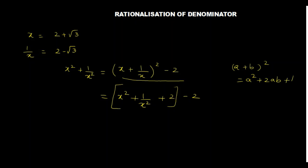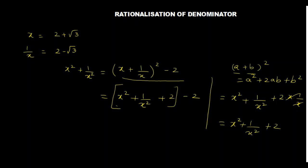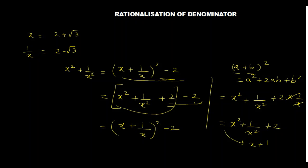We can write it in a plus b whole square form. If the value of a and b is x and 1 by x, this will be x square plus 1 by x square plus 2 into x into 1 by x — x and x cancel — so this becomes x square plus 1 by x square plus 2. So this is the form. We have done plus 2 minus 2: the plus 2 is taken into the bracket, and minus 2 is put outside. So we write x plus 1 by x whole square minus 2.